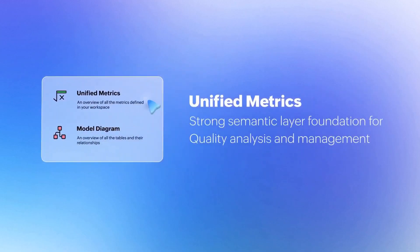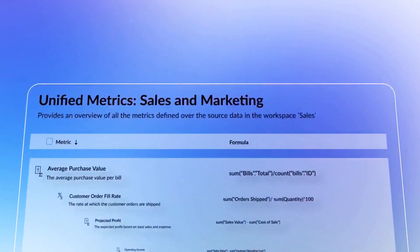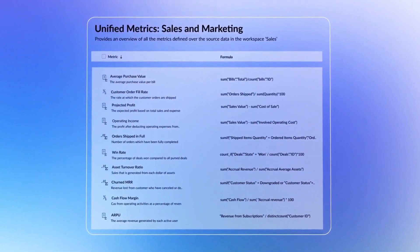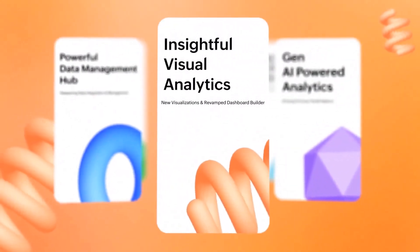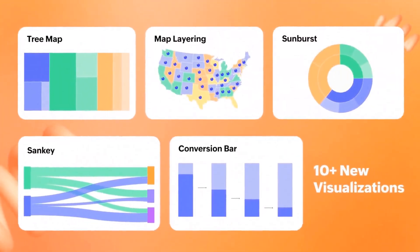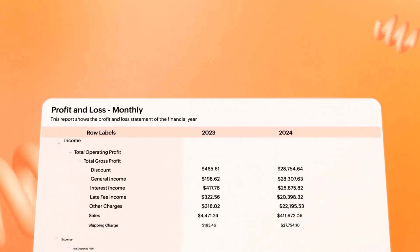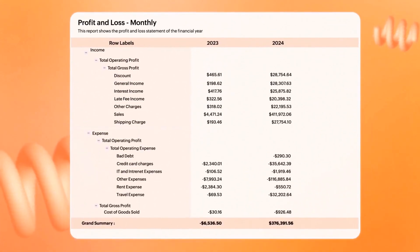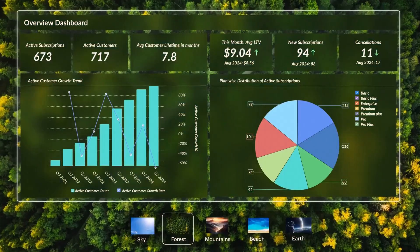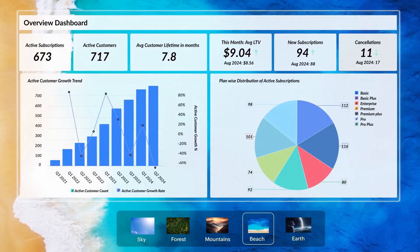Next, we have introduced the Unified Metrics layer, which enables you to create and manage all your business metrics in one place. This ensures consistency, reliability, reusability, and access control. These metrics can then be used to create reports, dashboards, or accessed independently through an API.